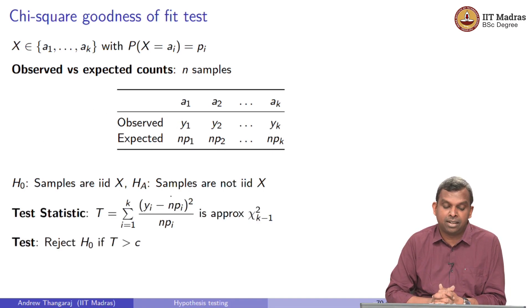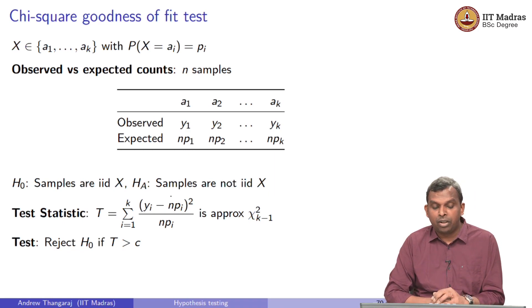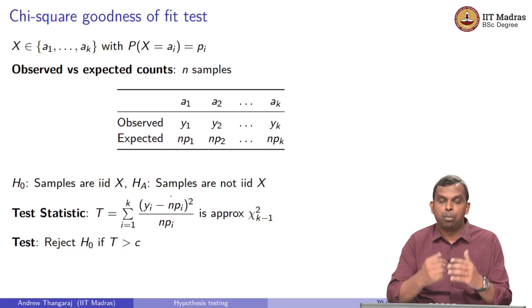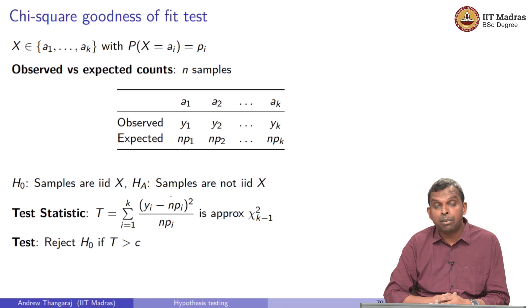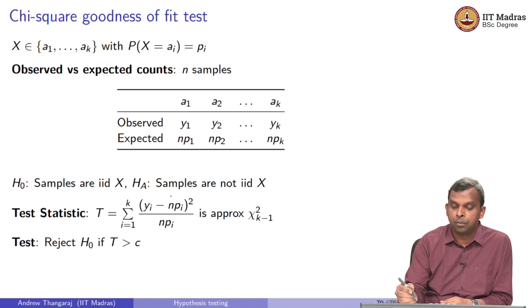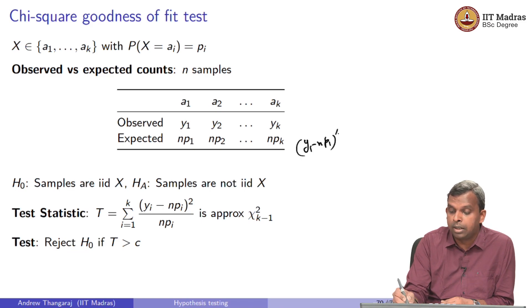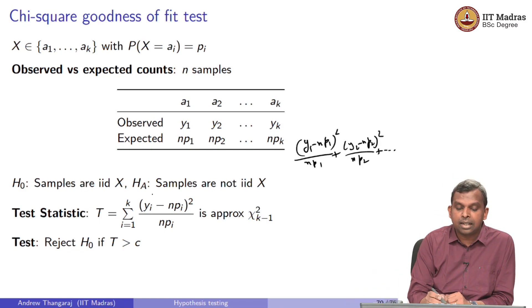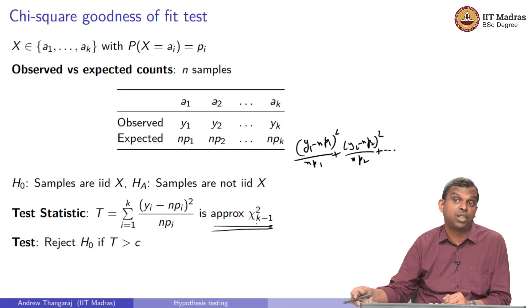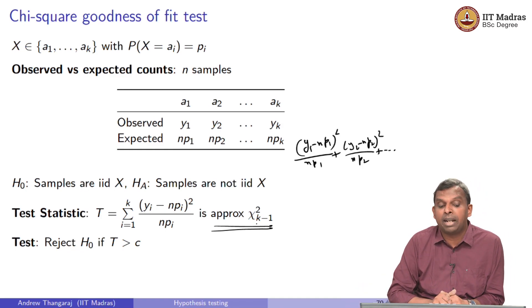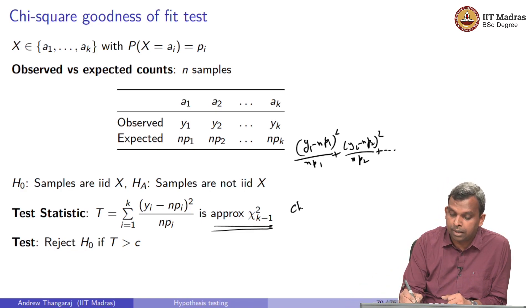It turns out the test statistic of interest here is some sort of a chi-squared statistic. How do you do it? We will call it T. You sum up over i equals 1 to k this number, this fraction. The numerator, you have yi minus npi square. So you do, in this case, if you want to write it down, it will be y1 minus np1 squared by np1 plus y2 minus np2 squared by np2 plus so on. That is the summation. It turns out this statistic, the distribution of the statistic, is approximately chi-squared k minus 1.